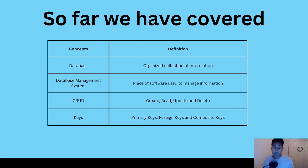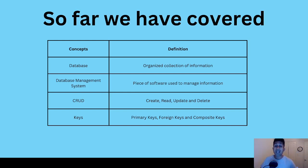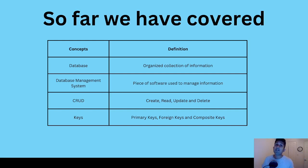We also learned the concept of CRUD, which stands for create, read, update, and delete. In the previous video we learned everything about keys. Primary keys are a unique identifier to identify rows, especially when employees might have common names. Foreign keys help you establish a relationship between two tables. And we learned about composite keys — a type of primary key created by concatenating or combining two or more columns.